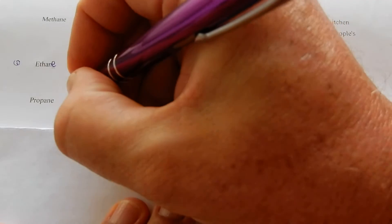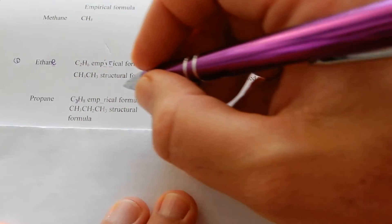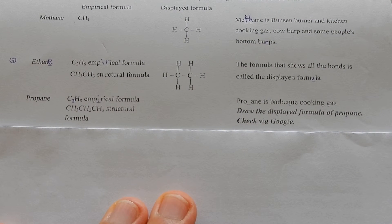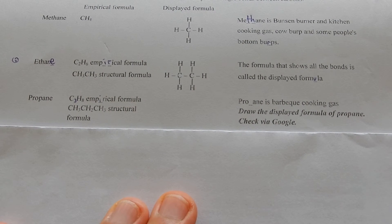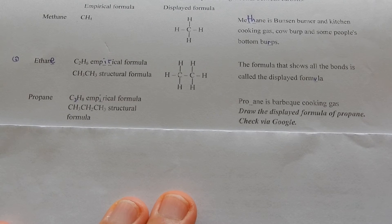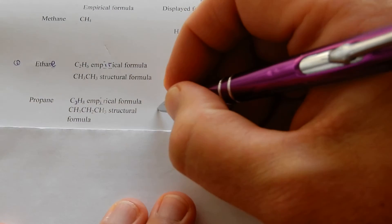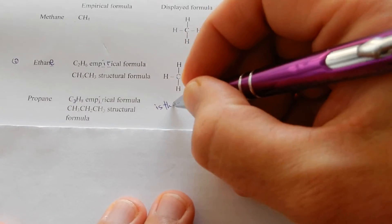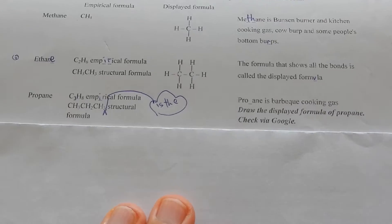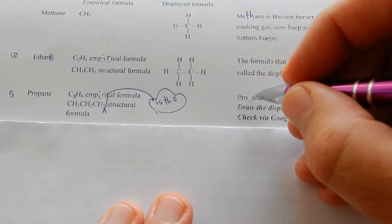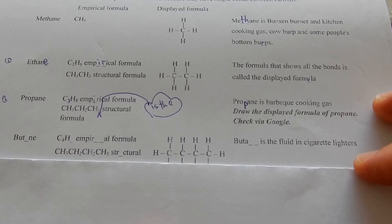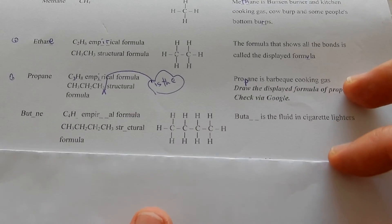Propane, C3H8 empirical formula, C3H3CH2CH3 is the structural formula. Propane is barbecue cooking gas. Draw the displayed formula of propane. Check via Google.